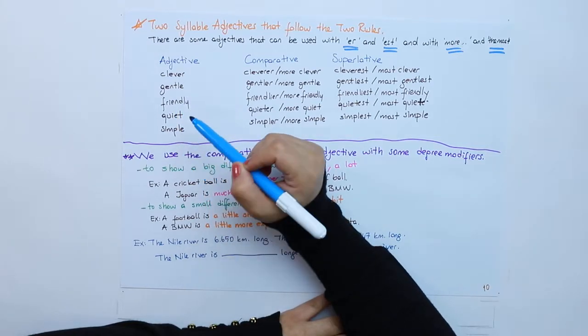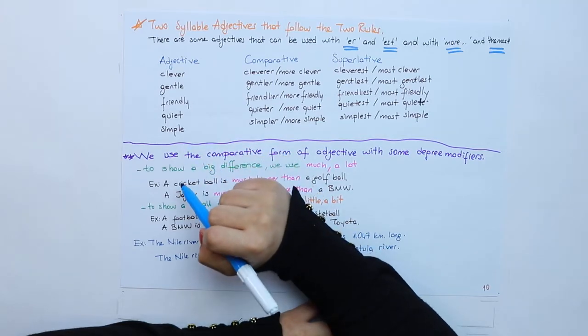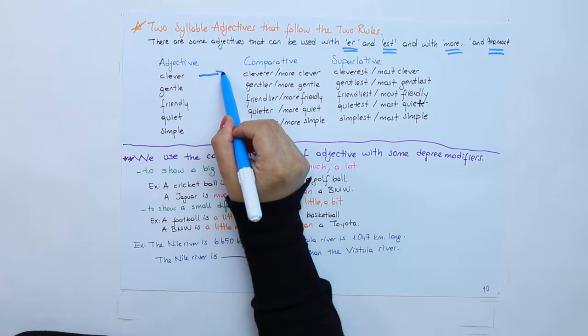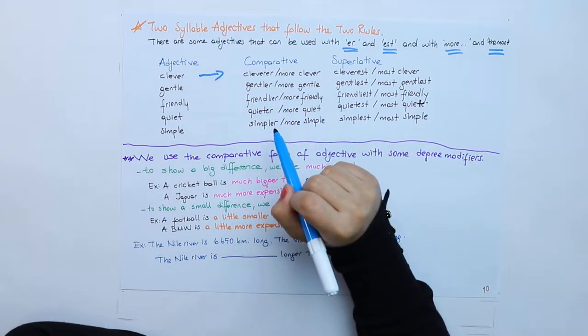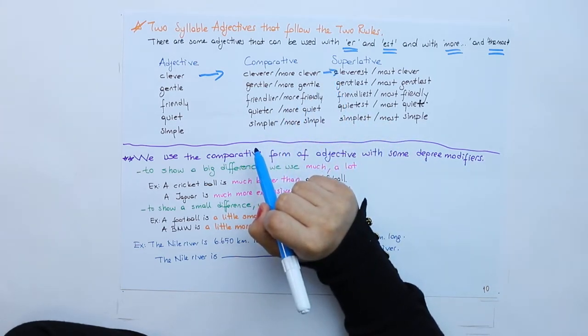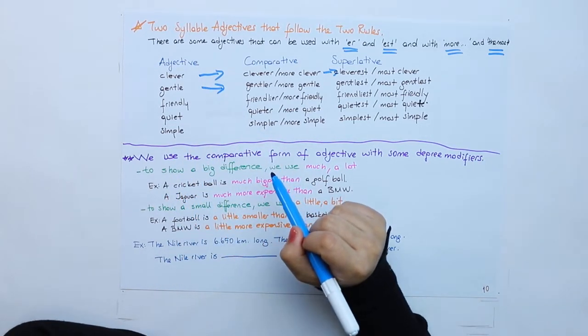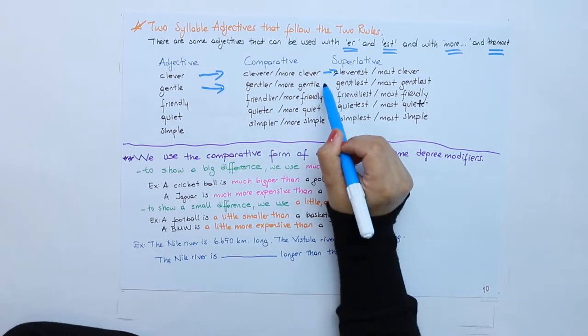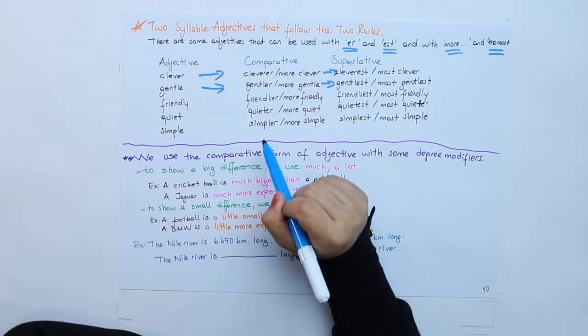Those adjectives are clever, gentle, friendly, quiet, and simple. The comparative forms are cleverer or more clever, cleverest or the most clever. Gentle, gentler or more gentle, the gentlest or the most gentle.